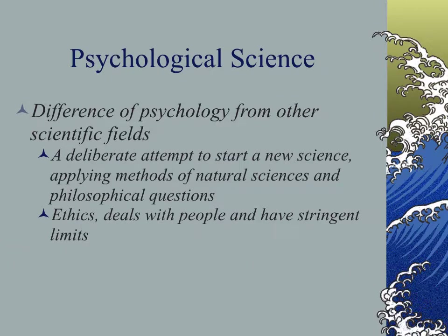First of all, psychology is a science. It's a deliberate attempt to quantify and measure something that's largely unquantifiable, which is kind of cool when you think about it. We do this by applying some of the natural science tools for empiricism — empiricism being that observable evidence that we look for.